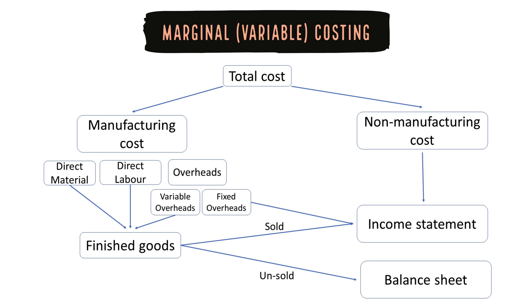Whereas direct material, direct labor and variable manufacturing overheads become part of the product costs. And to the extent the products are sold, they are charged to the income statement as cost of goods. And to the extent the products are unsold, they appear as inventory on the current assets section of the balance sheet.